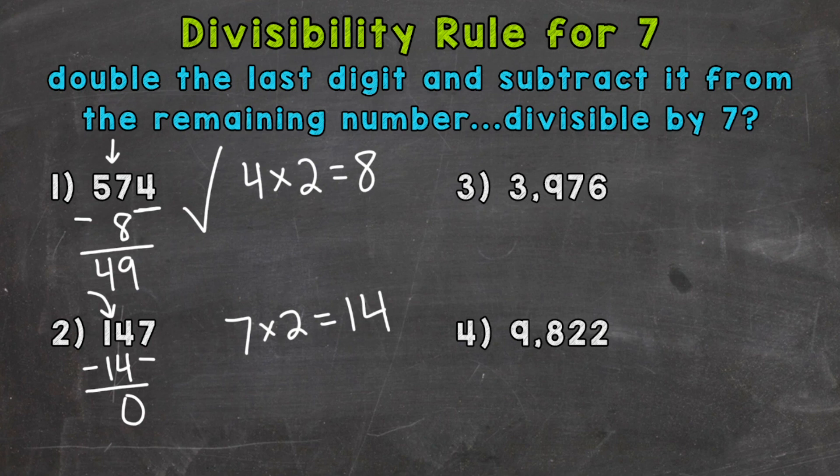Remember, 0 is divisible by any number. Therefore, 0 is divisible by 7. That means our original number, 147, is divisible by 7.